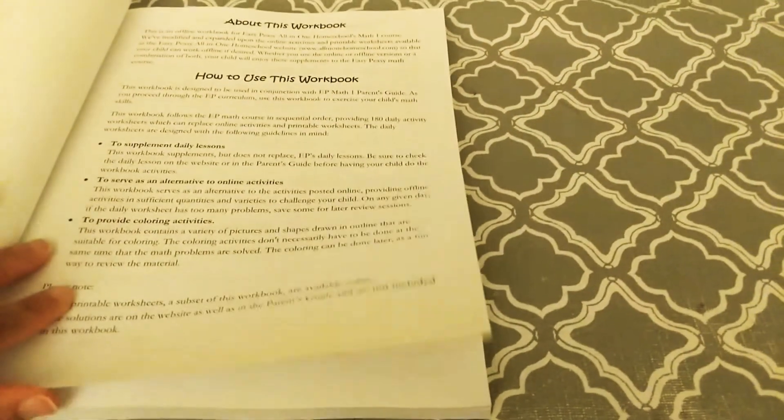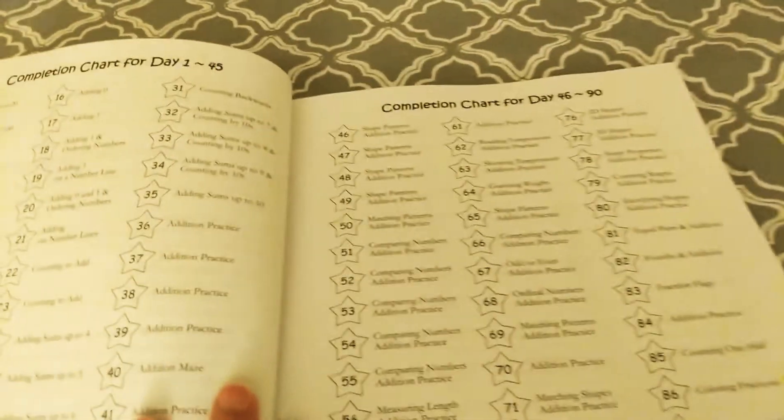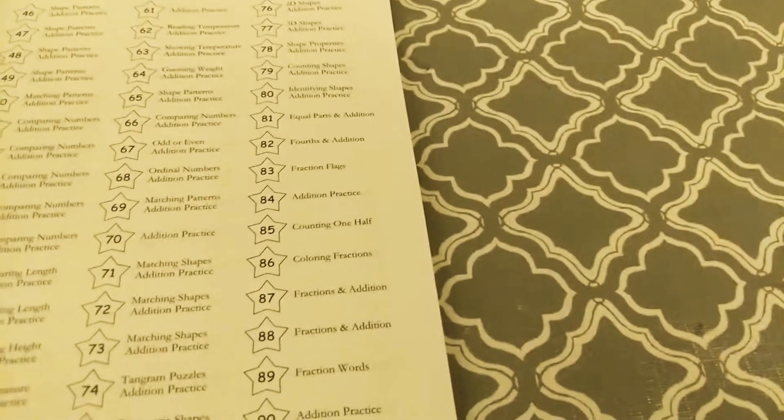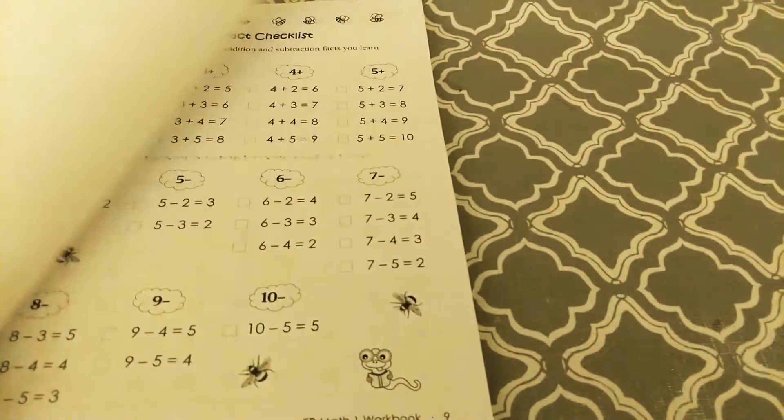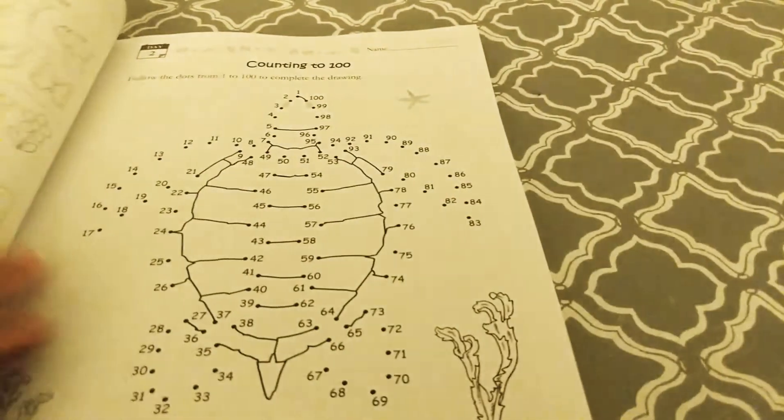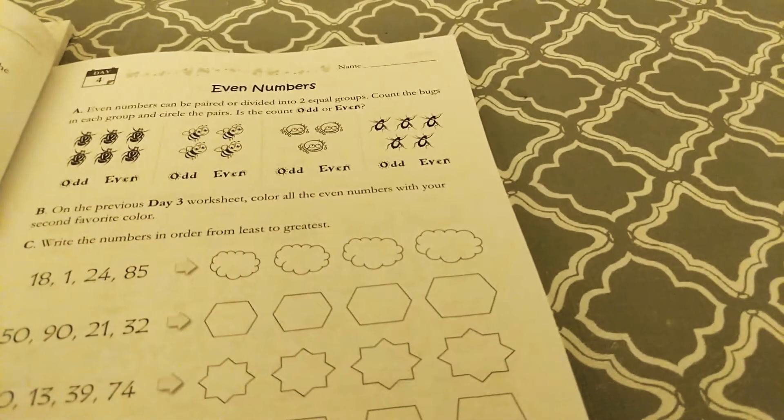Now how to use this workbook. Completion chart for day one through forty-five, forty-six through forty-nine, ninety-one through one thirty-five, one thirty-six to one eighty. These are the math facts that they're going to periodically tell you to go over and quiz on for memory. So these are all the days that you're going to need: day one, day two, day three, all the way to day one eighty.